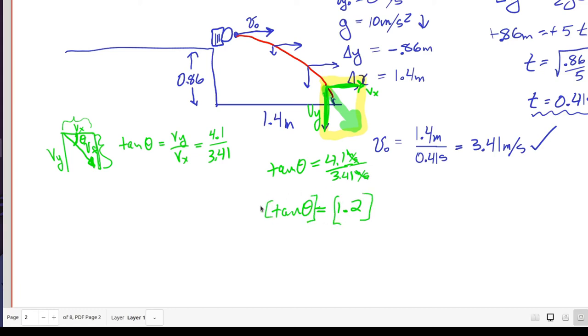So I want to apply the inverse tangent. Tan to the minus 1 is the button on your calculator. Tan inverse of 1.2. Tan inverse of tan of theta is just theta. So that equals tan to the minus 1 of 1.2, which works out to 50.2 degrees.